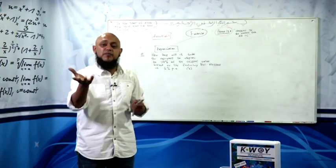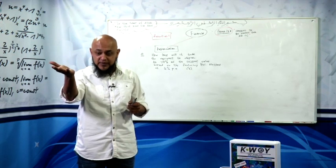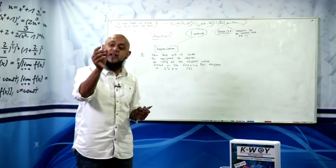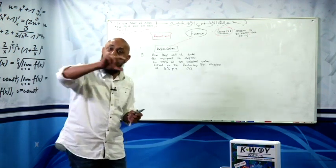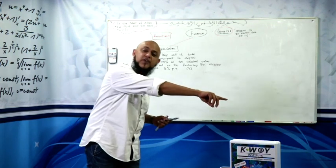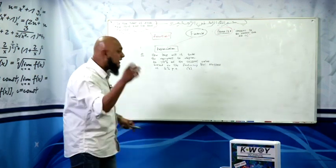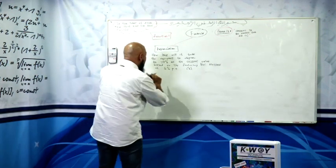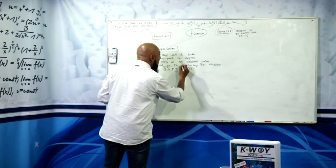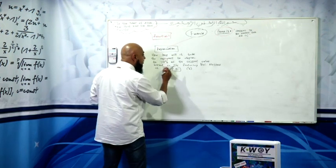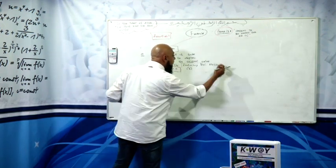Let us take for example, you bought an item for 100 rand today, you want to know how long will it take for that item to depreciate to 25 rand, from 100 rand to 25 rand. What period will it take if the depreciation rate is 16% per annum. That's your rate, on the reducing balance method.